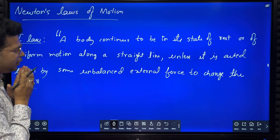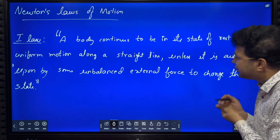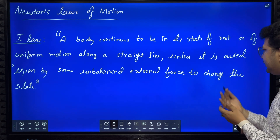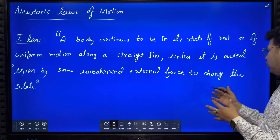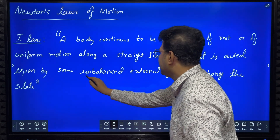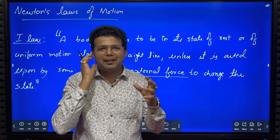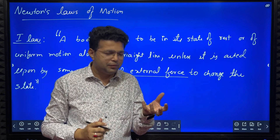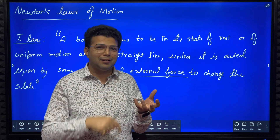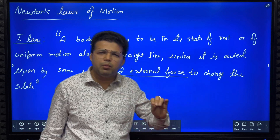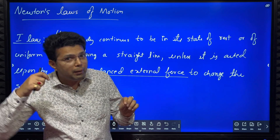Now we will see Newton's first law. A body continues to be in its state of rest or of uniform motion along a straight line unless it is acted upon by some unbalanced external force to change the state. In simple words: if a body is at rest, it will remain at rest, and if it is moving, it will keep moving, unless you apply some unbalanced external force.